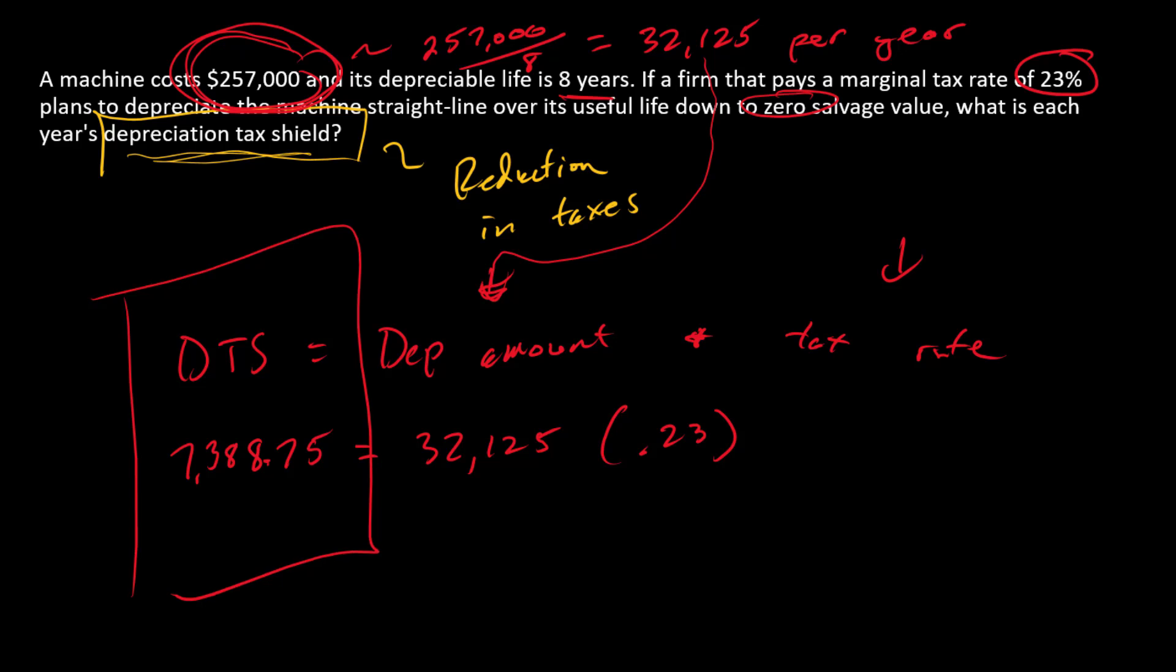There is the answer. The interpretation here is this represents how much taxes are reduced each year because of the depreciation process.